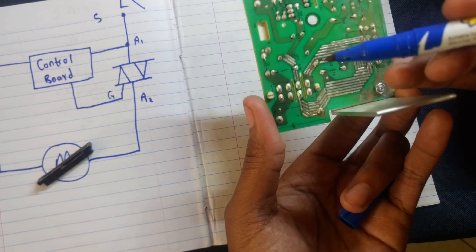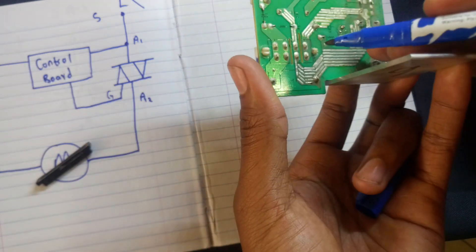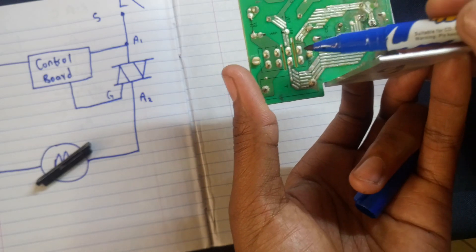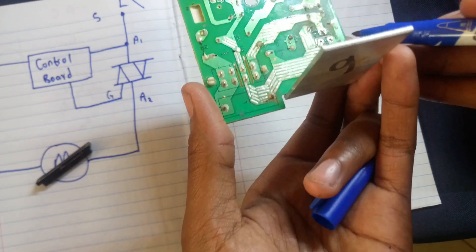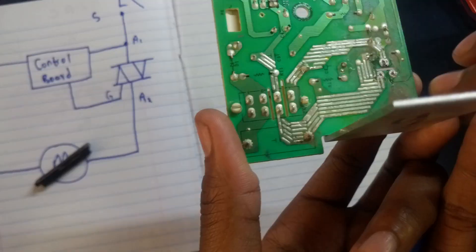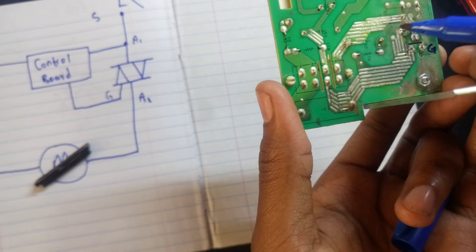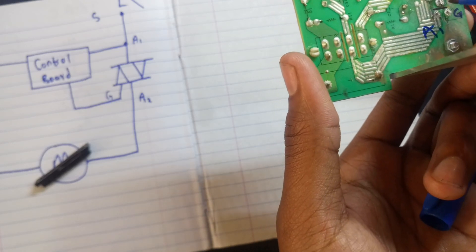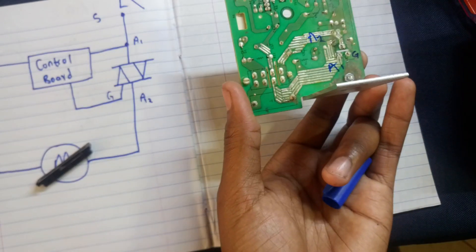The live comes through this terminal. The work of the triac over here is to connect this terminal and this terminal using signals from this terminal. This here was the gate, and we can say that this terminal over here was A1 and this other terminal over here was A2. That's it.